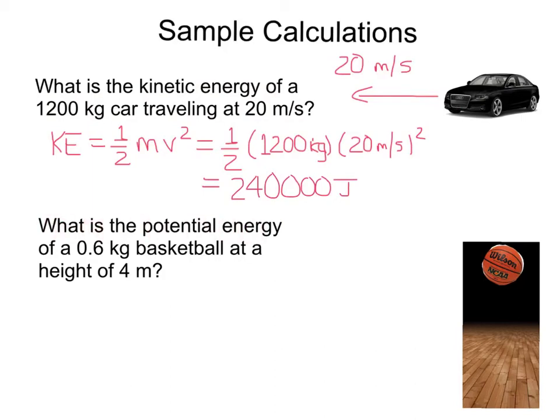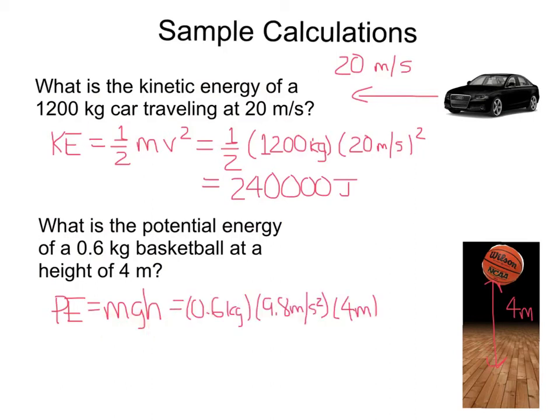What is the potential energy of a 0.6 kilogram basketball at a height of 4 meters? Here we have the basketball at a height of 4 meters above the court. Its potential energy is given by mass times the acceleration due to gravity times its height: 0.6 kilograms times 9.8 meters per second squared times 4 meters, giving a potential energy of 23.52 joules.